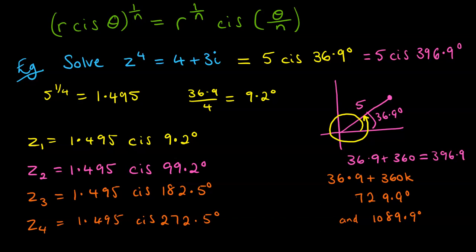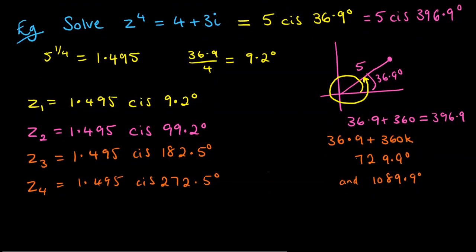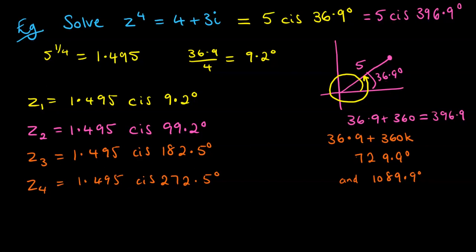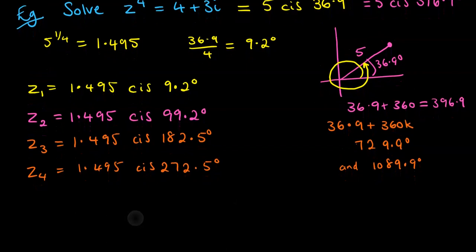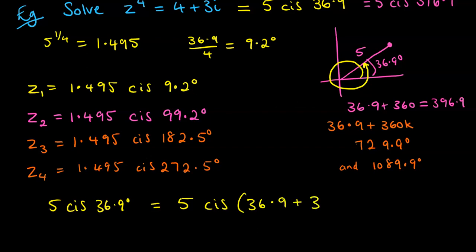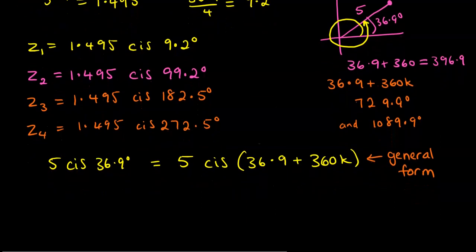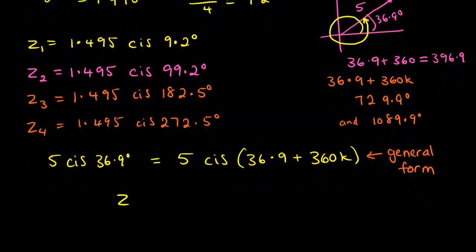So now we've got our four roots to that equation. Now we can express this in a general form as well as working out each of the individual roots by using this k notation that we were using. So I'm going to adapt this to tidy it up a little bit and put it more in a general form. So if we go back to what we had at the beginning with it being 5 cis 36.9°, then actually we can rewrite that as 5 cis of (36.9 + 360k). And that is called our general form, which then means that we can write our solution in a general form as well.